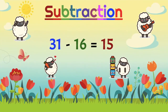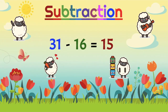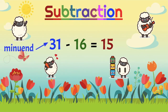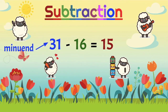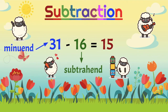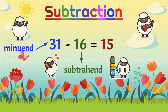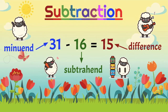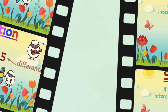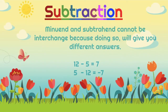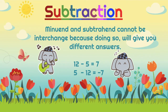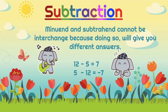In a subtraction sentence, 31 minus 16 is equal to 15. Our minuend is 31, 16 is our subtrahend, while 15 is our difference. We need to take note, learners, that the minuend and subtrahend cannot be interchanged, because doing so will give you different answers.